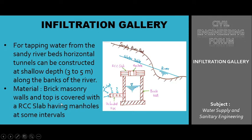The material used here is brick masonry walls and the top is covered with an RCC slab having manholes at some intervals. Its cross-section is very similar to that of the infiltration well, but the only difference is these are horizontal and infiltration wells are vertical. Linearly on this horizontal tunnel, at some regular intervals, manholes are placed, and as shown in the figure, it is covered with an RCC slab.